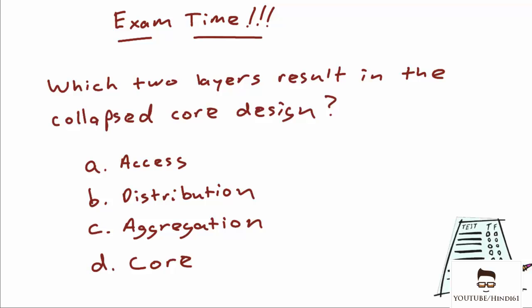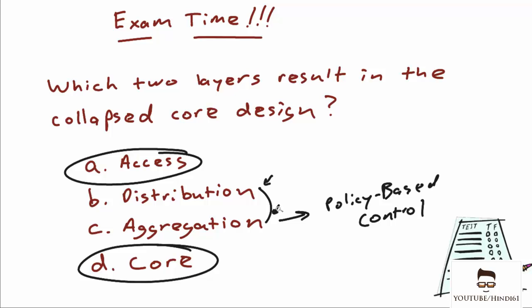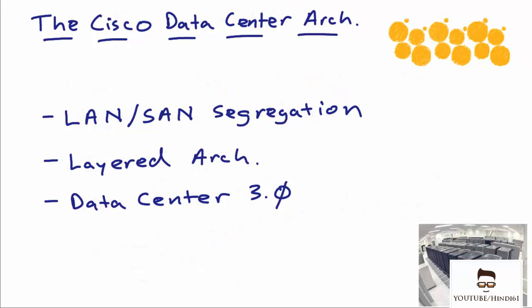Which two layers result in the collapsed core design? When we collapse the core, we end up with the core layer and the access layer. Note that distribution and aggregation describe the same layer — sometimes called the aggregation layer, sometimes the distribution layer, sometimes the policy-based control layer. If two answer options are describing the same thing, they're probably not both correct. The answer is simply: when we collapse the core, we get the core layer and the access layer.